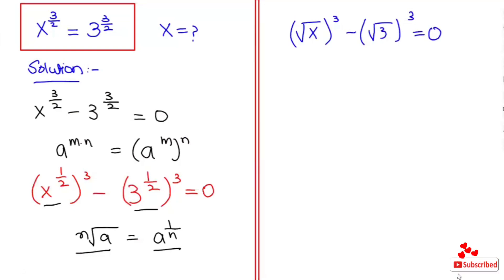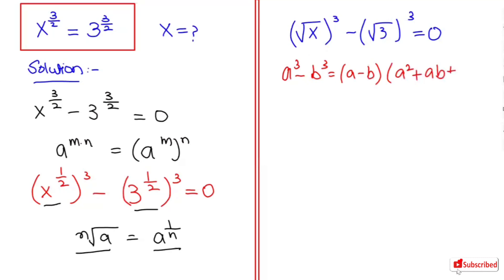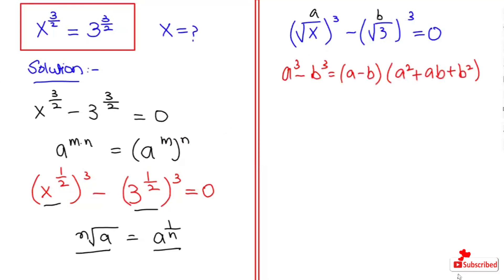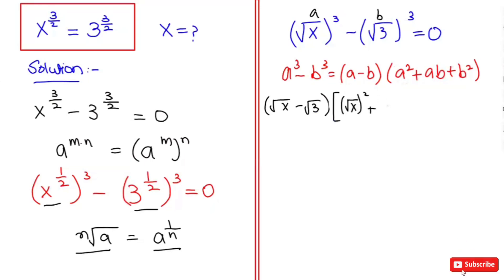Now I am going to use the algebraic identity that is a to the power of 3 minus b to the power of 3 is equal to a minus b bracket a squared plus ab plus b squared. So here this is our a value and this is our b value. So this equation turns to root x minus root 3, and then root x squared plus root x times root 3 plus root 3 squared.